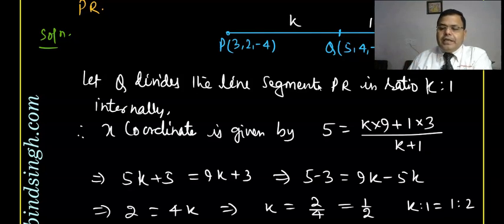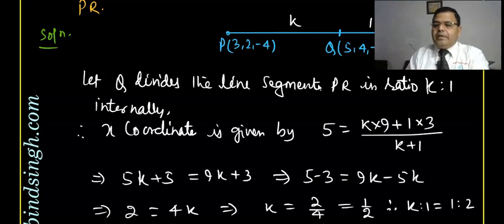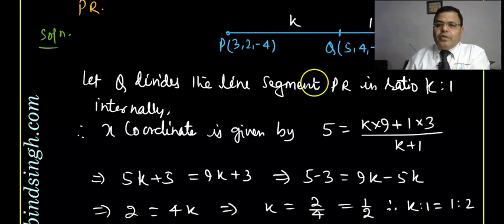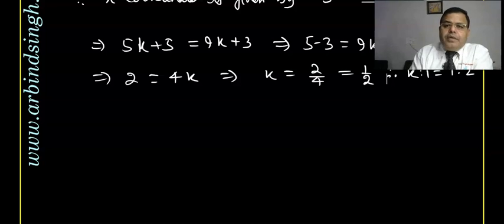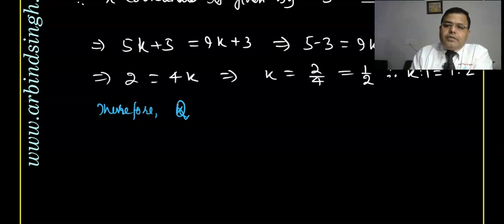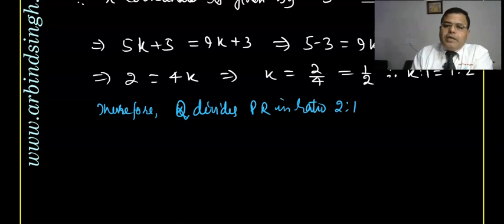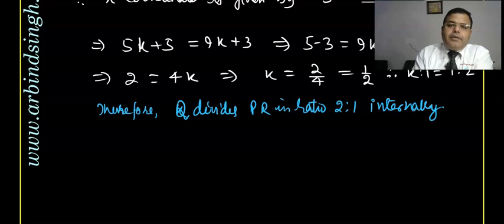Therefore k:1 is 1:2, so Q divides PR in ratio 1:2 internally. I hope you got it.